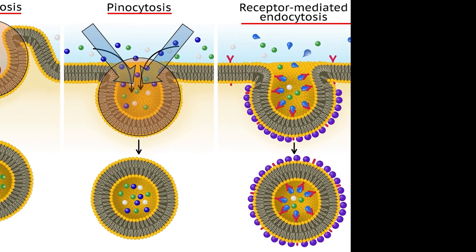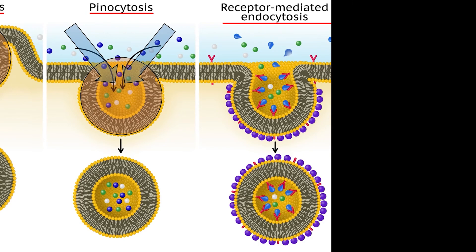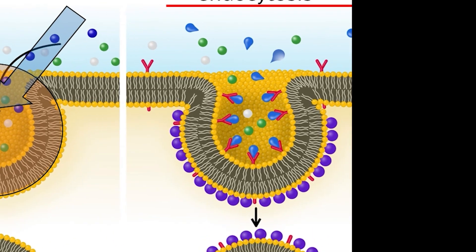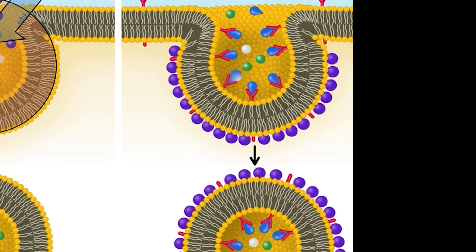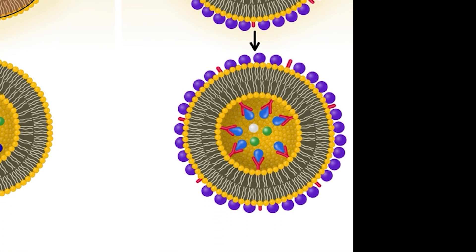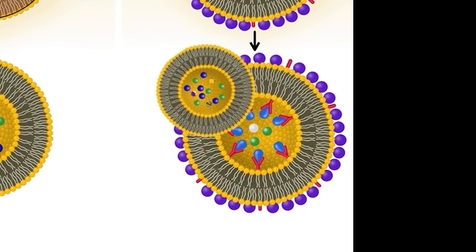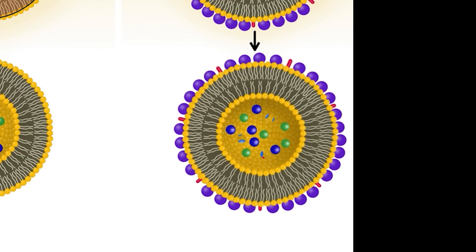Cells can use receptor-mediated endocytosis to take in a large quantity of a very specific substance. For instance, this is how your body transfers and recycles molecules like cholesterol, which would otherwise get stuck in the plasma membrane. Cholesterol is bonded to protein molecules, making lipoproteins. These lipoproteins can bind to specific receptors on the cell's surface. When enough receptors have been activated, the entire portion of the cell membrane undergoes endocytosis. The vacuole merges with a lysosome and is digested completely, and the components from the original cholesterol molecules can then be recycled.